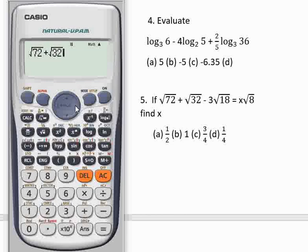Is equal to, x alpha calc, then you have x square root of 8. Shift calc, then equal to. You have 0.5, and that is the same as 1/2, option A. Now let's clear it.